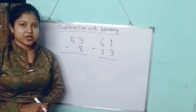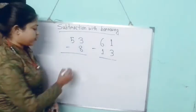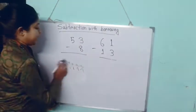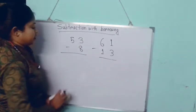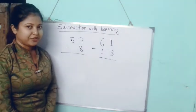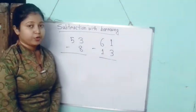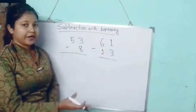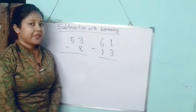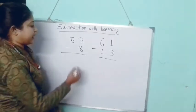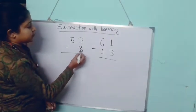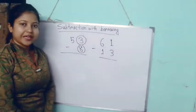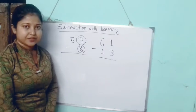Now how can we subtract? You already know how to subtract — we draw lines and then cross the lines. But here we cannot subtract 8 from 3, because we only have 3 lines and we need to erase 8 lines. So here we have to borrow 10 from the previous number.